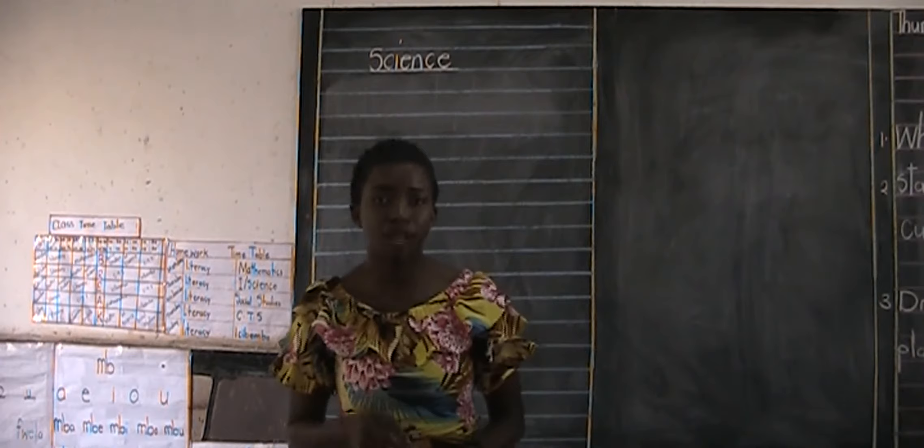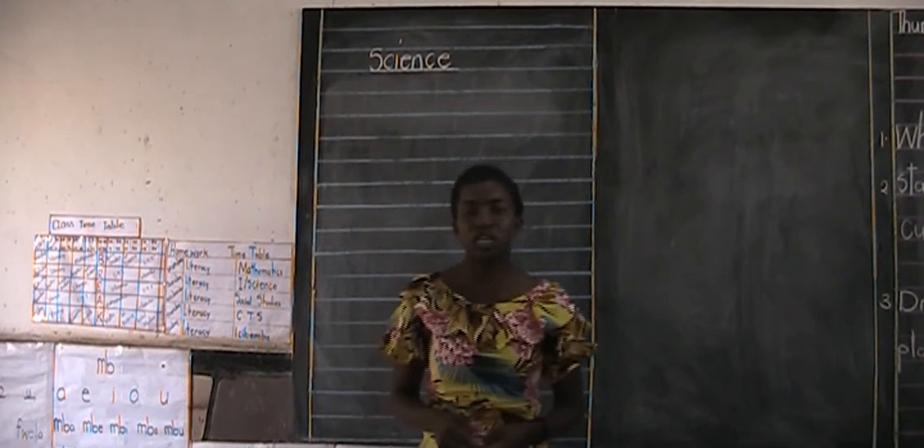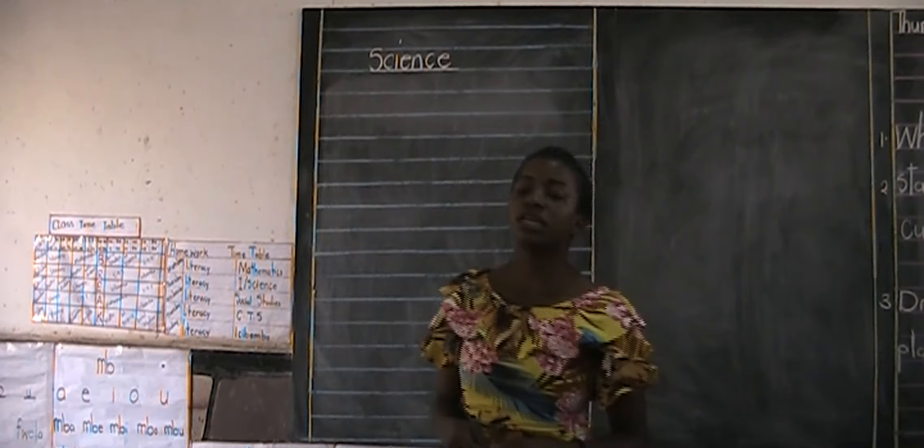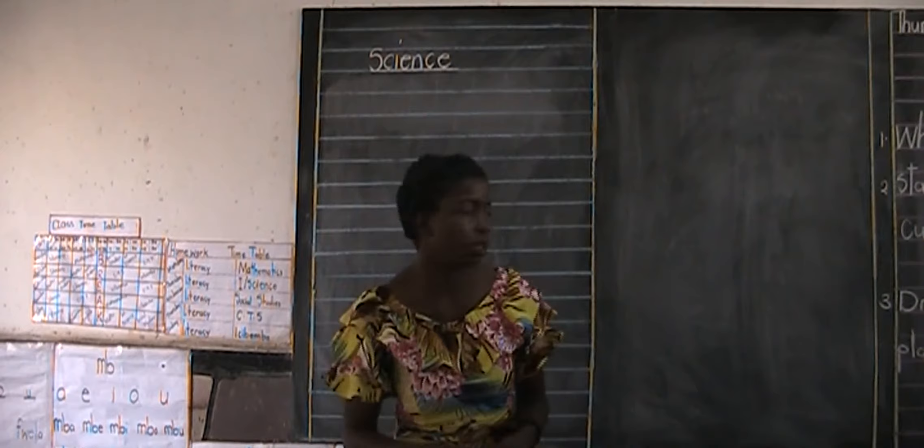So now since we've revised on what we had learned last time in science, today we are going to look at something different. Today we are going to be focusing on the cultivated plants. So can we all say cultivated plants? Again, cultivated plants.